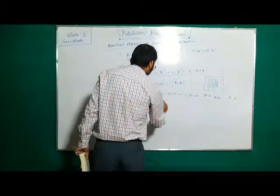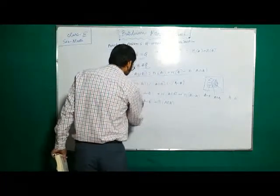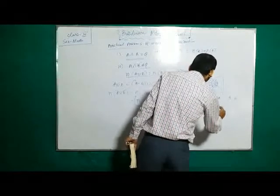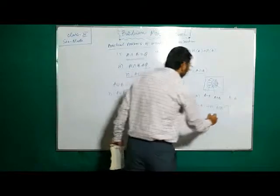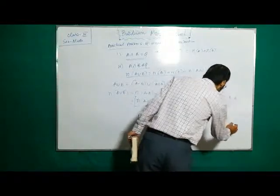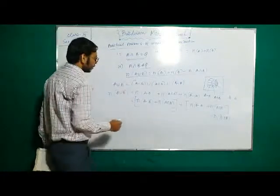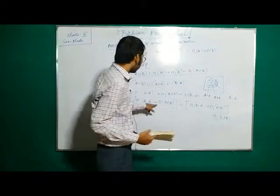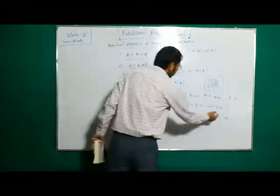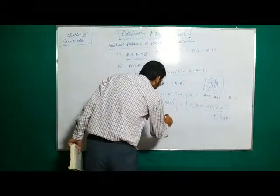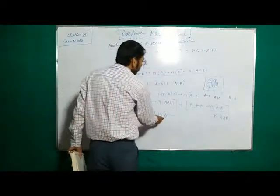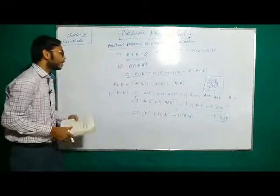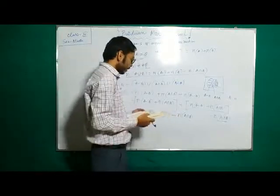We add n of A intersection B as one portion, then write n of A intersection B again — adding it extra — and adjust by subtracting n of A intersection B. The portion within the bracket — n of A minus B added with n of A intersection B — gives n of A. Similarly, n of B minus A added with n of A intersection B gives n of B. So we get n of A plus n of B, and the remaining term is minus n of A intersection B. Therefore, n of A union B equals n of A plus n of B minus n of A intersection B.